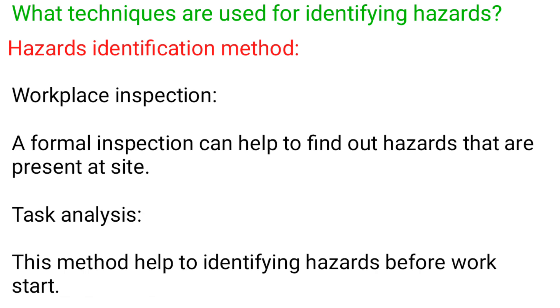Workplace inspection: a formal inspection can help to find out hazards that are present at a site. Task analysis: this method helps to identify hazards before work starts.